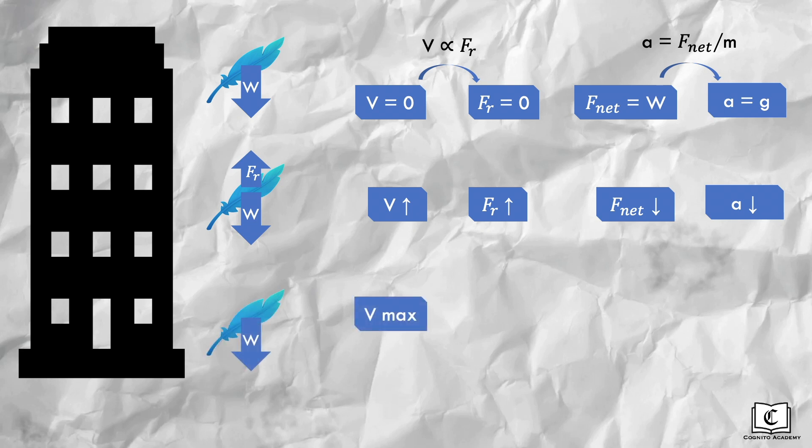This feather will accelerate to a velocity where air resistance is equal to its weight, cancelling each other out. Hence net force on the feather is zero, meaning acceleration is also zero. Velocity now is constant.